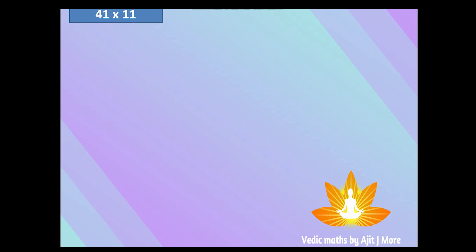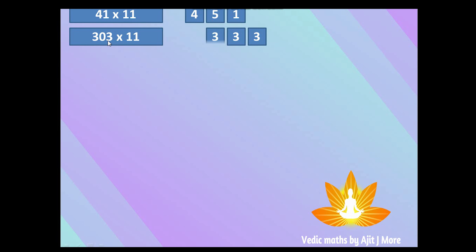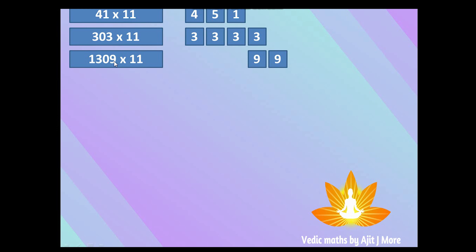Let's take some more examples quickly. 41×11: put zeros on both ends — 0+1=1, 1+4=5, 4+0=4 — answer: 451. Next example 303×11: 0+3=3, 3+0=3, 0+3=3, 3+0=3 — answer: 3,333. Then 1309×11: 0+9=9, 9+0=9, 0+3=3, 3+1=4, 1+0=1 — answer: 14,399.